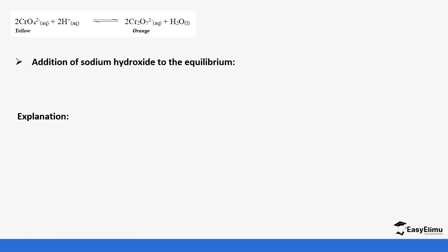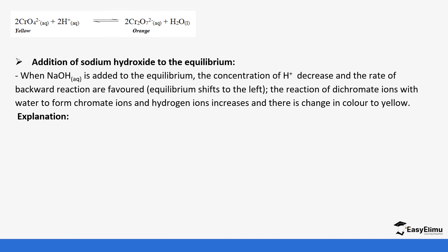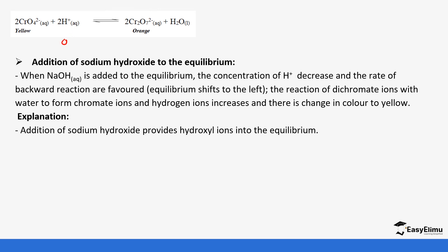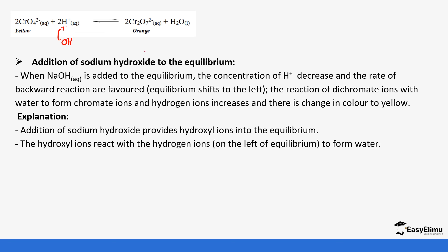Another example is the reaction of chromate ions with hydrogen ions to form dichromate ions plus water. When sodium hydroxide is added into the equilibrium, hydroxide ions are introduced. Those hydroxide ions react with hydrogen ions to form water, removing hydrogen ions from the system. Since there are not enough hydrogen ions to counteract, the equilibrium shifts such that more hydrogen ions are produced — meaning the backward reaction is favored. The back reaction of dichromate ions with water to form chromate ions and hydrogen ions increases, and that is the reason why the back reaction is favored.